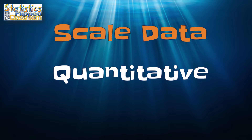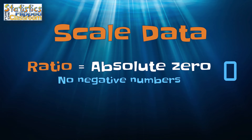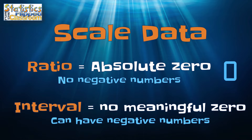Scale data are also called quantitative data or continuous data. The difference between interval and ratio data is that ratio-level data have a meaningful zero point, and interval-level data do not have a meaningful zero point, meaning that interval-level data can have negative values, whereas ratio-level cannot. Other than that, the analyses that we run with these two types of data are the same, because what matters most is not the zero, but the scale — hence, scale data.